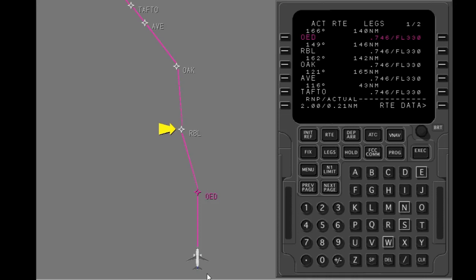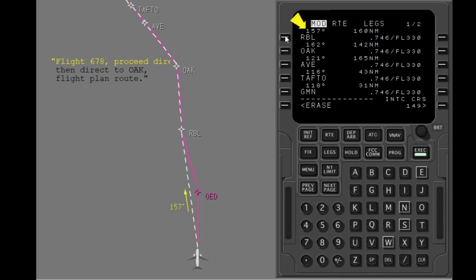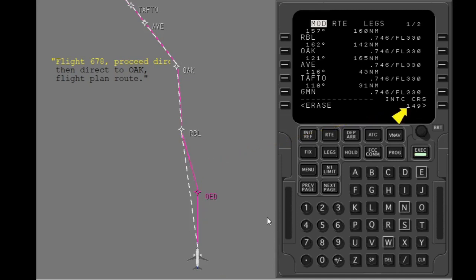Now let's look at another example. This time you will intercept a course to a waypoint that is already part of your route. Obey this clearance by moving Red Bluff into the active waypoint line. Any waypoint entered into the active waypoint line creates a direct course to that waypoint. This time the intercept course line is not empty. The FMC has preloaded a default course intercept. The FMC default intercept course is the original course to that waypoint. The preloaded default is displayed in small font. You can select this default course by pushing the line select key, or you can enter a new course intercept. To obey this clearance you need to fly direct to Red Bluff. Take the necessary action.